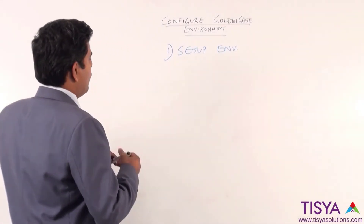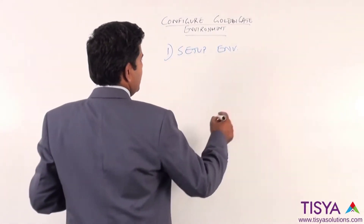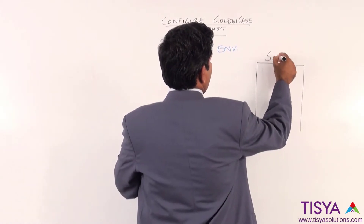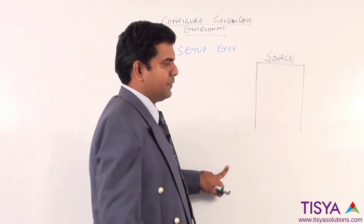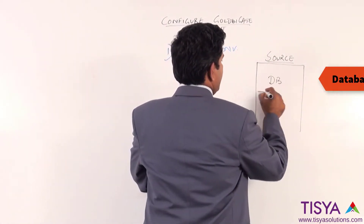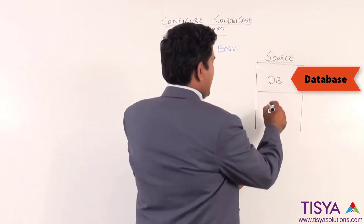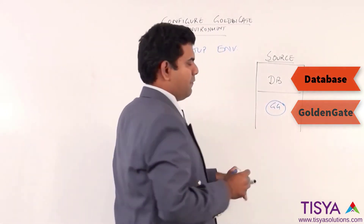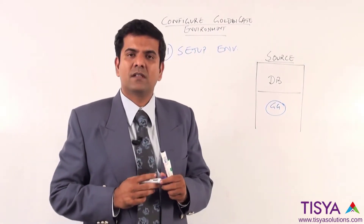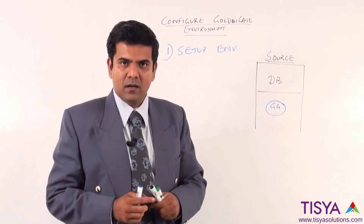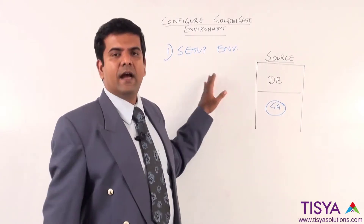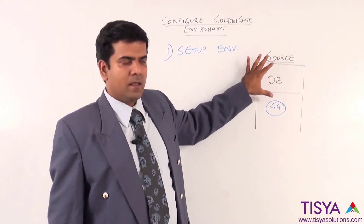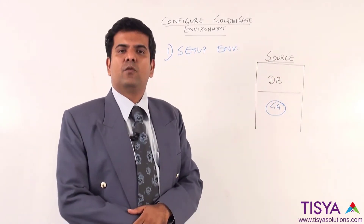When we are talking about setting up a GoldenGate environment, we are assuming that there is a source set up available in which there is a database already available and we have installed the GoldenGate software. Since this course is GoldenGate for Oracle, we will specifically look at what should be done in an Oracle database to configure GoldenGate to make it work.